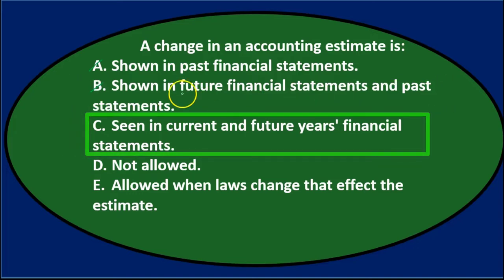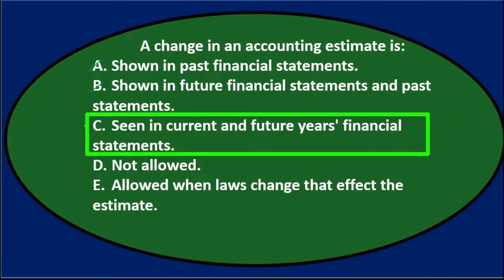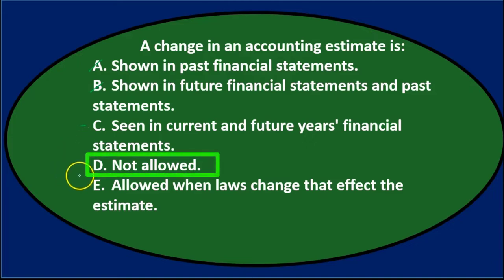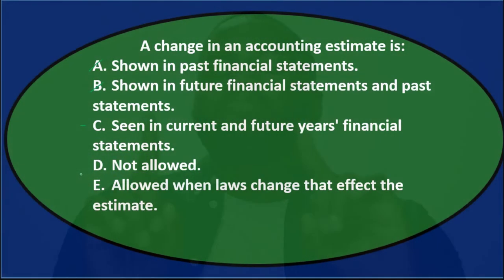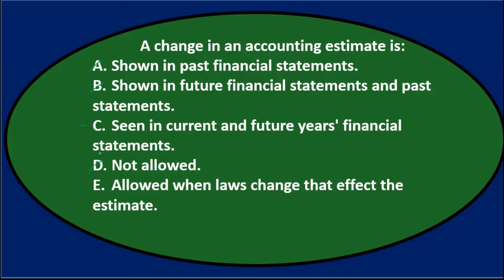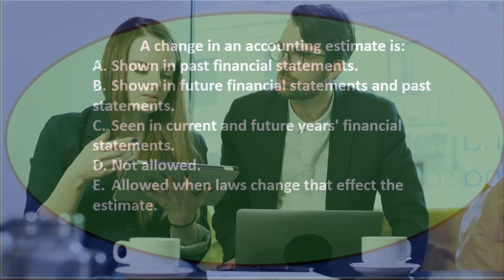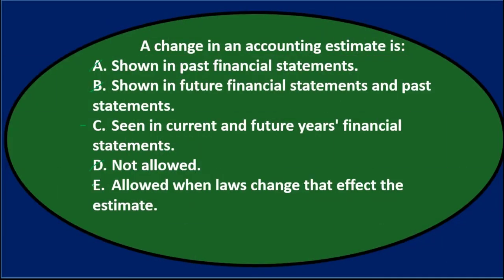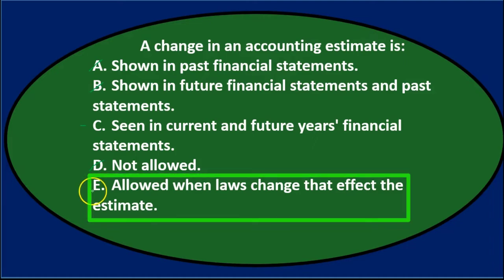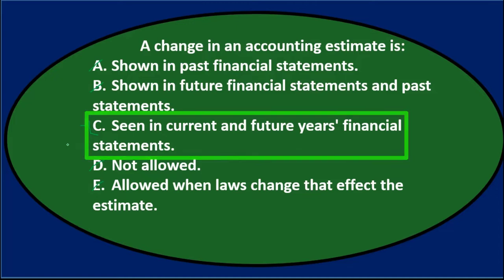C. says seen in current and future years' financial statements, and that's typically what we're going to do — make the change as of this year and going forward. D. says not allowed, but generally accepted accounting principles want to allow us to present financial statements as accurately as possible, so changes are typically allowed. E. says allowed when laws change that affect the estimate, but that's not the condition required to report the change. So the best answer is C: seen in current and future years' financial statements.